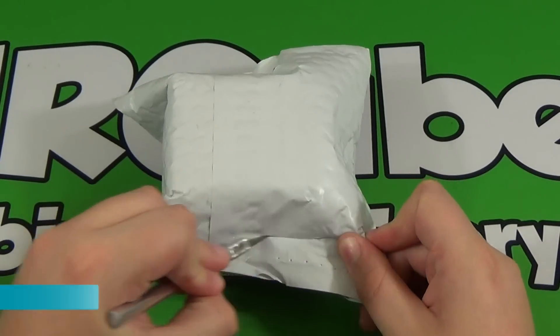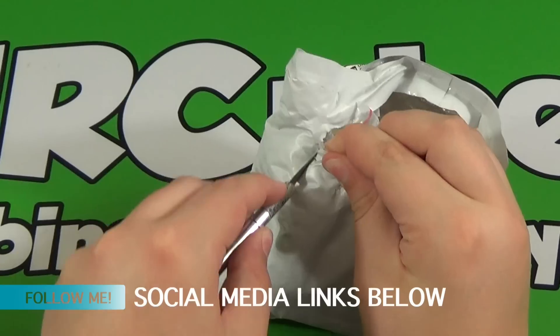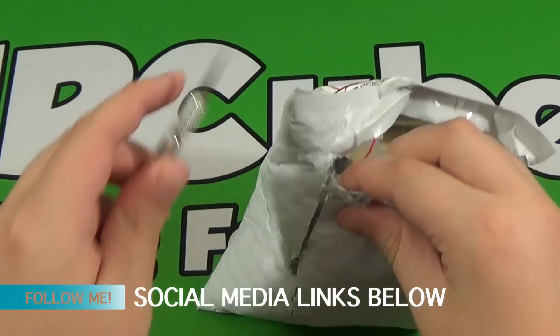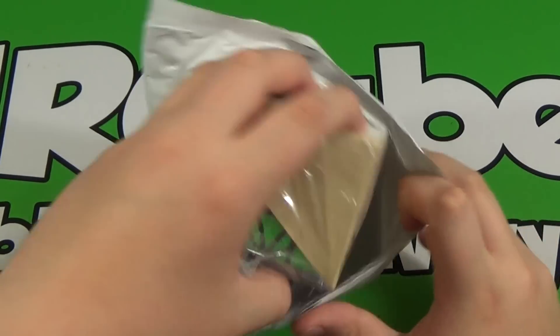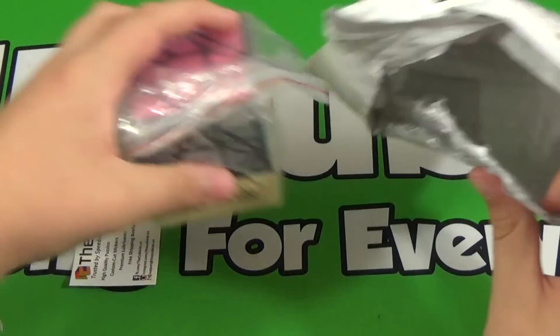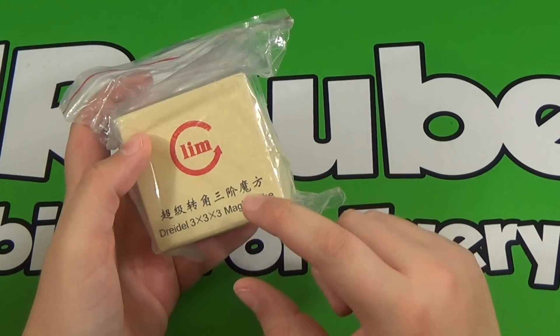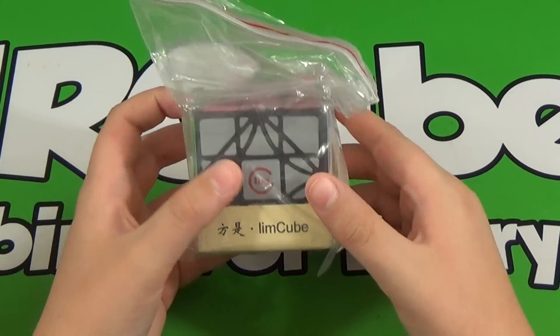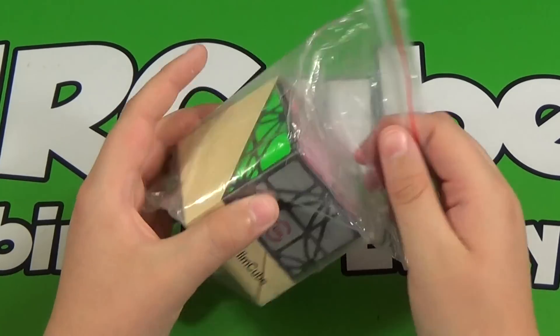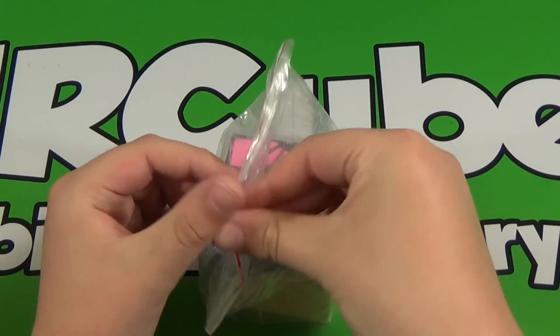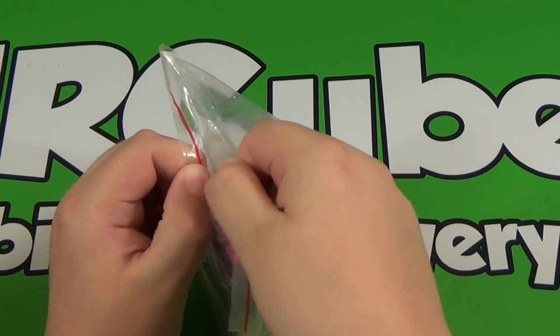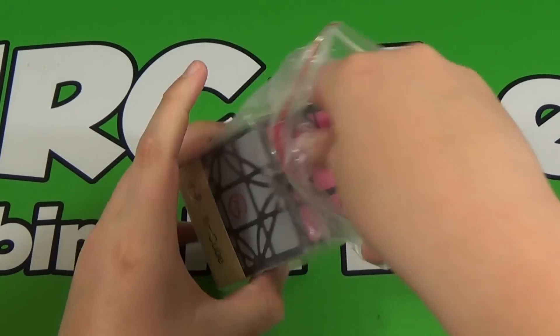So in here should be the brand new Dreidel 3x3. Here is the cube, and then the business card is down there. The Dreidel 3x3 is made by Limcube, which seems to be like a side brand of fangxi sort of, which I guess I hear is their line of non-WCA puzzles, and this is the first one.